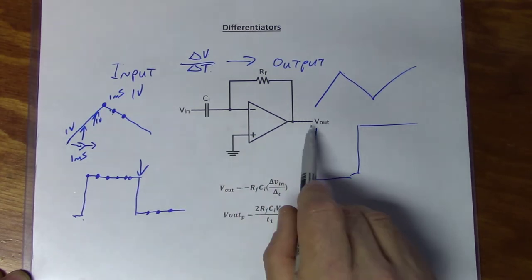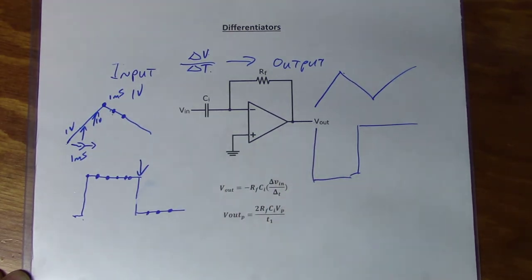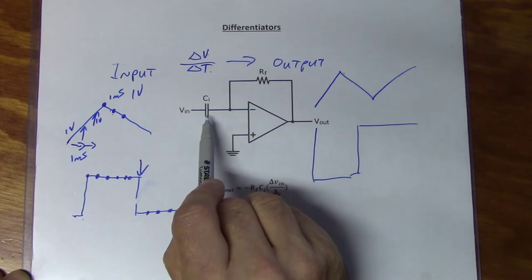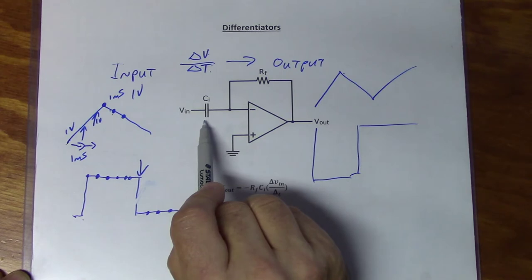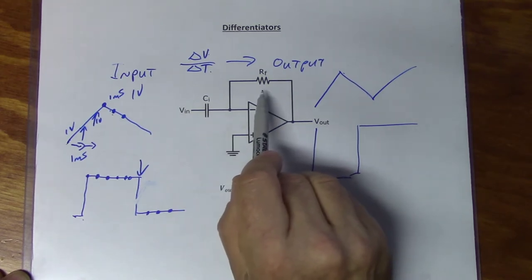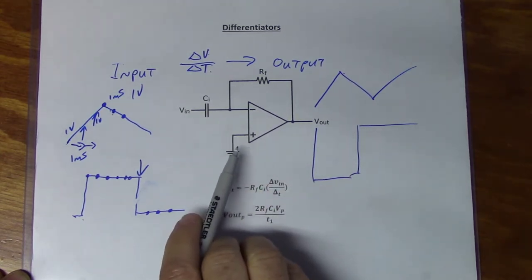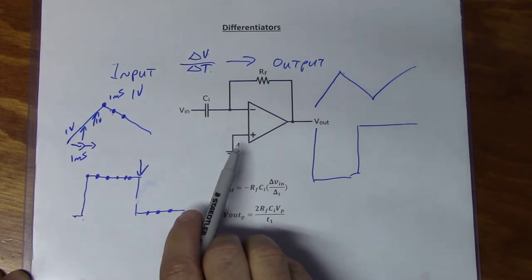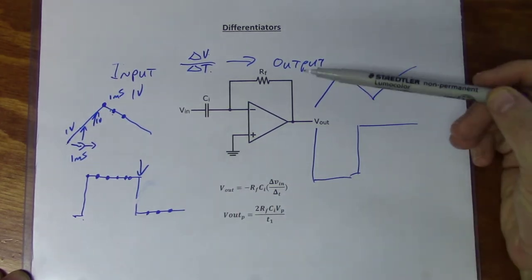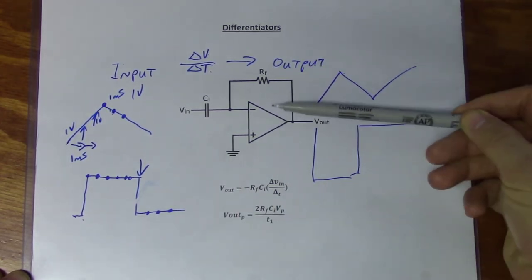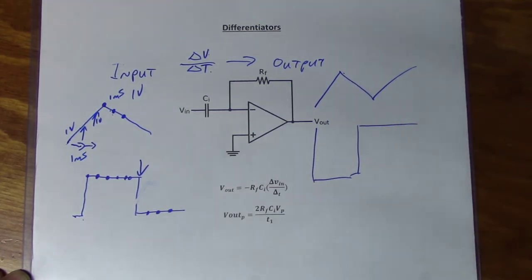So a differentiator is nothing more than a device that looks at the rate of change of voltage over a period of time and gives us a voltage proportional to that rate of change at the output. The faster the input changes, the bigger the output changes. This is all governed by the RC time constant set up by our input capacitor CI and our feedback resistor — we'll apply some time constant theory to that application shortly.